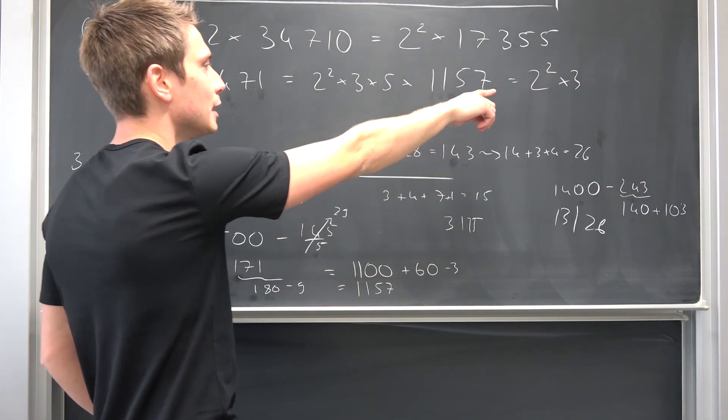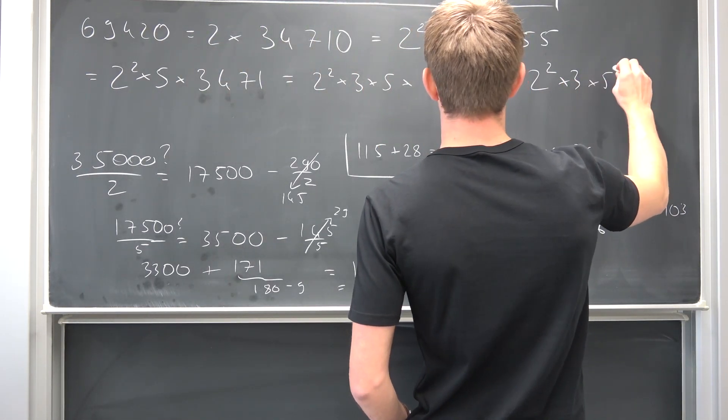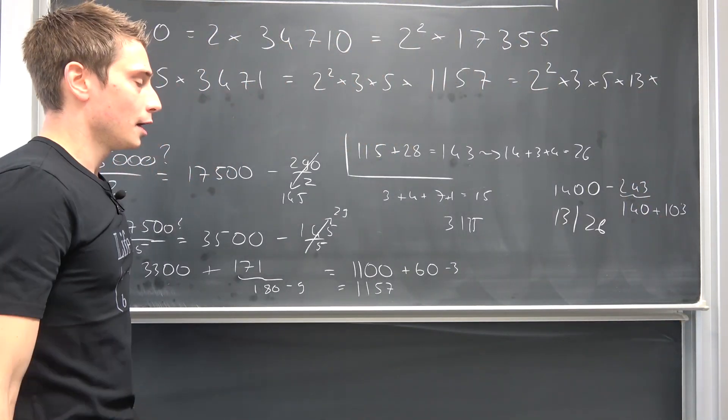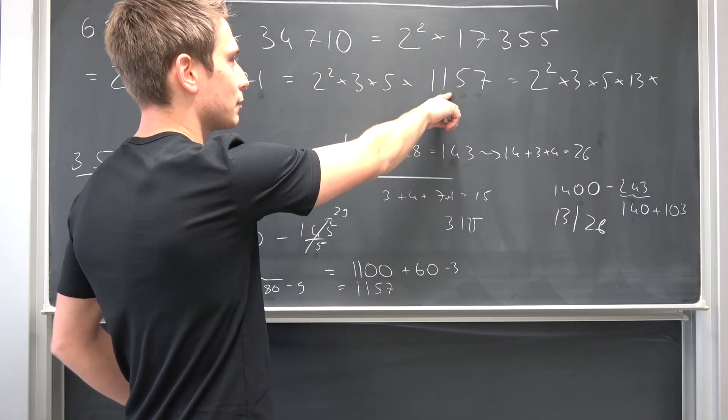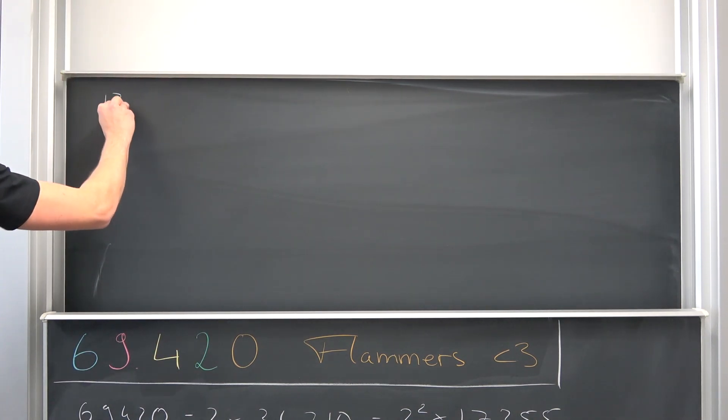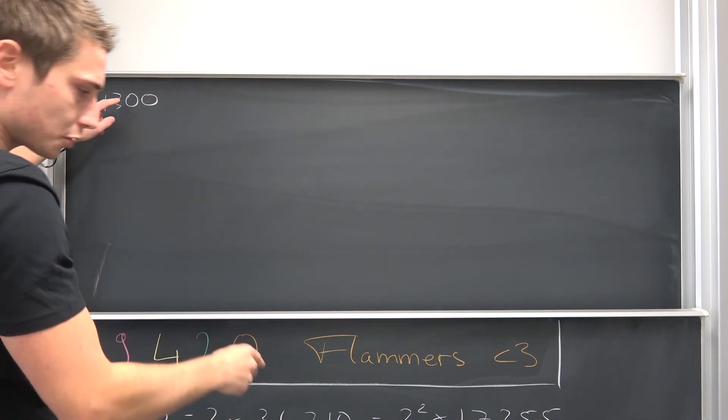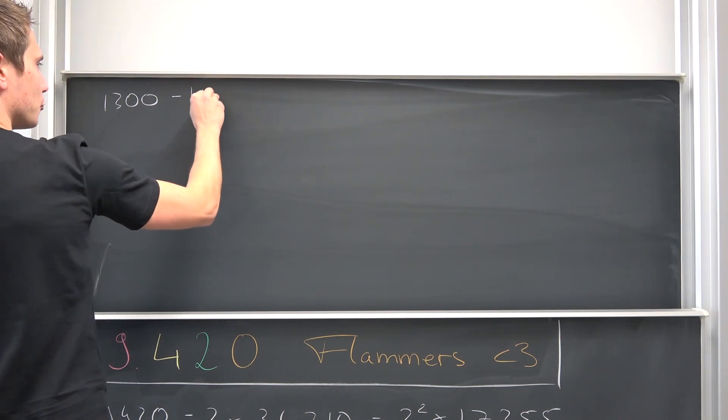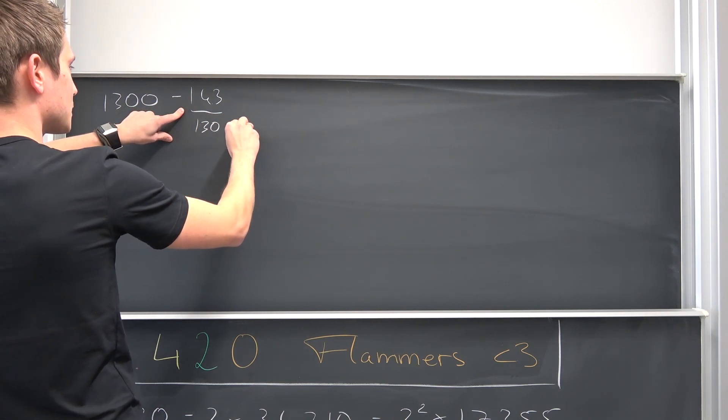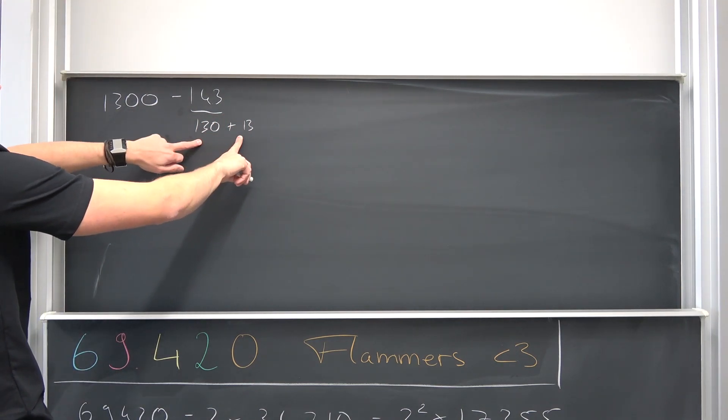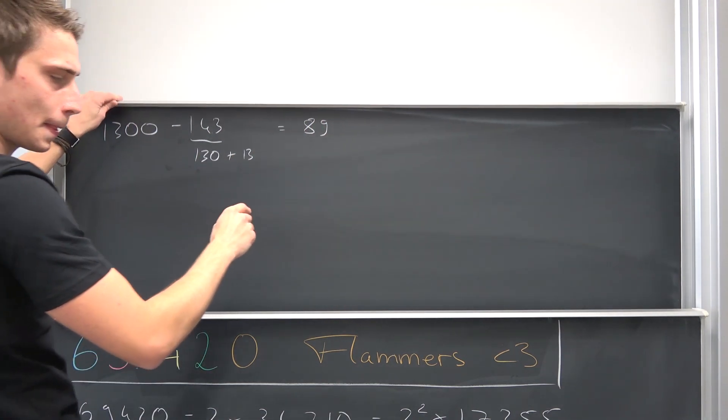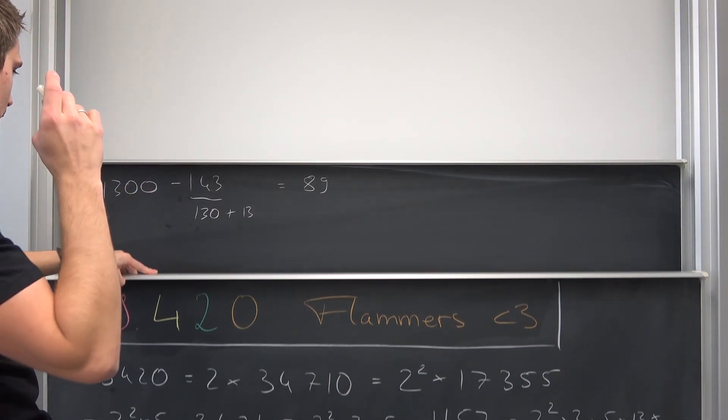Meaning this thing right here is 2 squared times 3 times 5 times 13 times something. What times 13 gives us 1,157? Let me see. The closest one is 1,300 minus 143. 143 is exactly 130 plus 13, right? So this makes 11. So we have 100 minus 11 gives us 89.